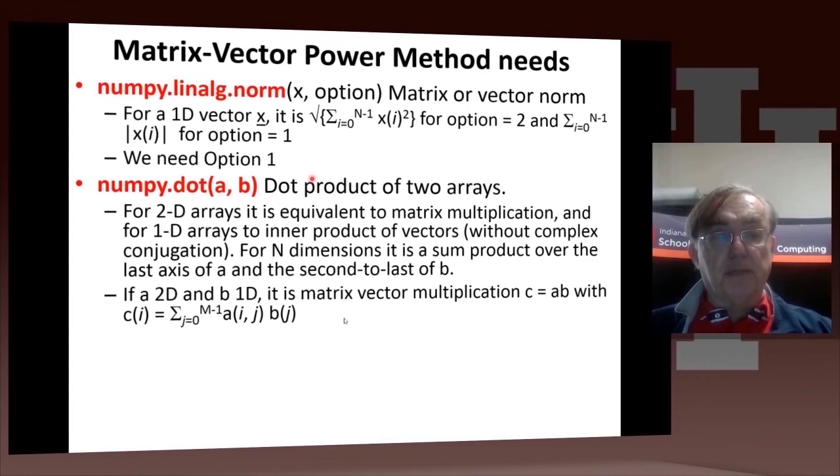We use these two built-in Python methods, the norm method, which I pointed out has its option. If the option is 2, it calculates traditional Euclidean norm. And for option of 1, it calculates the sum of the moduli. And in this algorithm, the values of X in fact are all positive, so the modulus doesn't actually matter. But we, as I mentioned, need option 1.